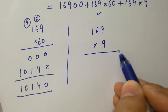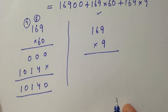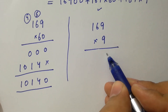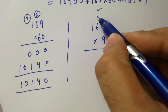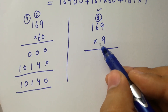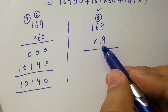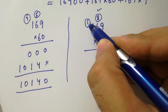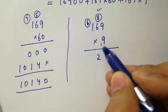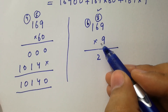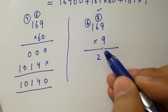For 169 times 9: 9 times 9 is 81, write 1 carry 8. 9 times 6 is 54, plus 8 is 62, write 2 carry 6. 9 times 1 is 9, plus 6 is 15. So we get 1521.